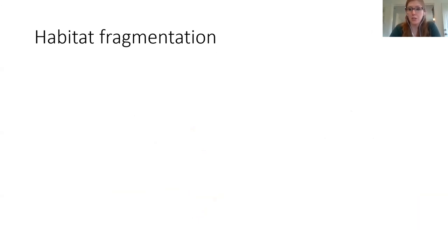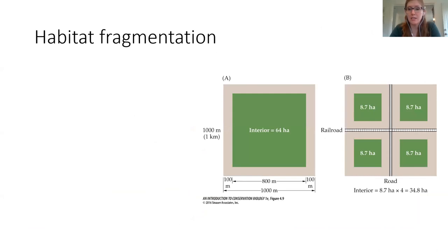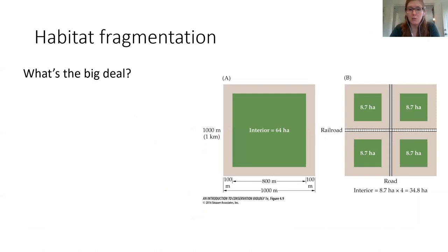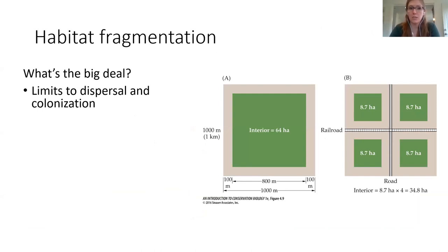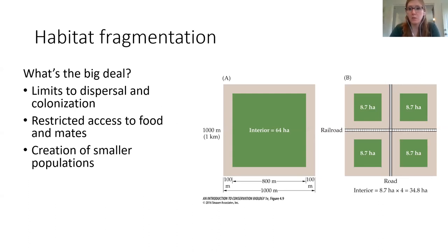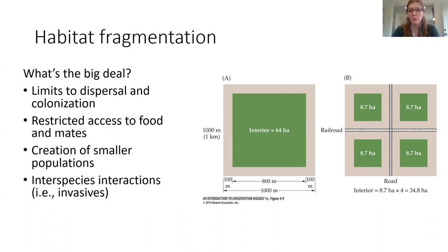The other side of habitat destruction is habitat fragmentation. This is the idea that you can take a big parcel of uninterrupted habitat and if you start putting roads, railroads, trails, or housing developments in it, you basically fragment that area into a whole bunch of different subplots. This causes a cascade of problems: some animals don't want to move outside of their habitat, so they're stuck with limited dispersal and ability to colonize new areas. It also causes restricted access to food and mates, creates smaller populations that aren't intermixing their genetics, escalates invasive species interactions, and causes edge effects.